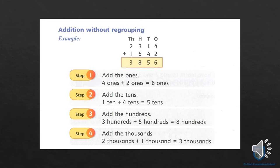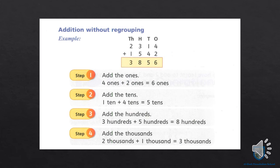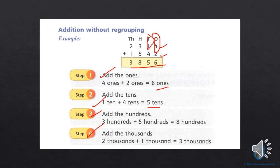On the next page, we have addition without regrouping — regrouping means without any carry. We have a four-digit number added to another four-digit number with no carry. When we add them, we get three thousand, eight hundred and fifty-six. Step one is we always add the ones first. Then tens, then hundreds, then thousands. I hope you understand.